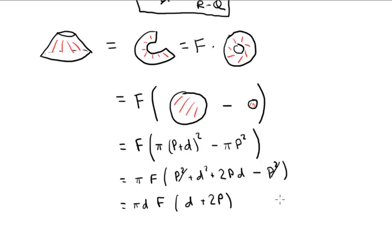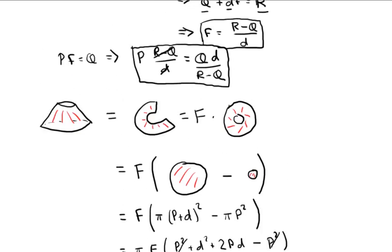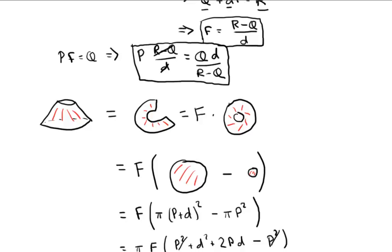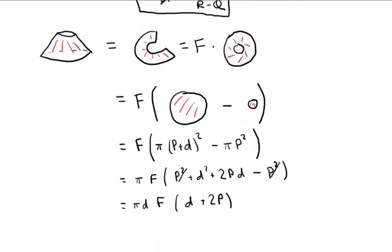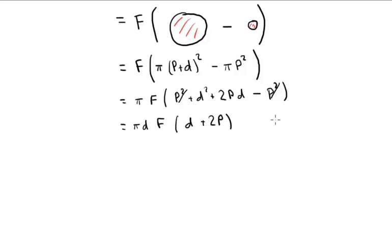Now we know that, let's just recall, f equals r minus q over d, p equals q times d over r minus q. Let's just write that out again, let's just write that out again, f equals r minus q over d, p equals qd over r minus q.